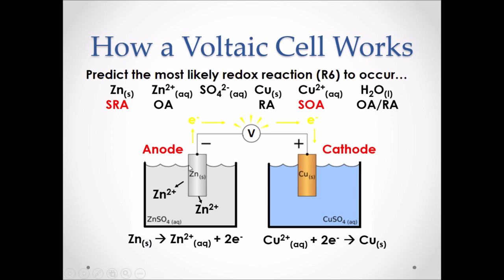If we think about the mass gained or lost at each electrode: at the anode, we are breaking down the solid, so over time the mass of the anode will decrease. At the cathode, we are gaining electrons and forming new copper solid, so as time moves forward, the mass of the cathode will increase.